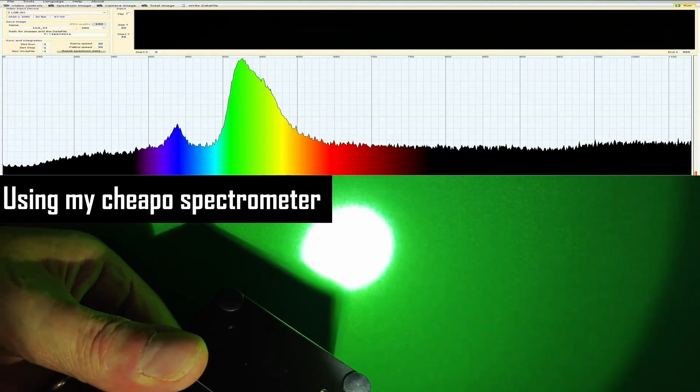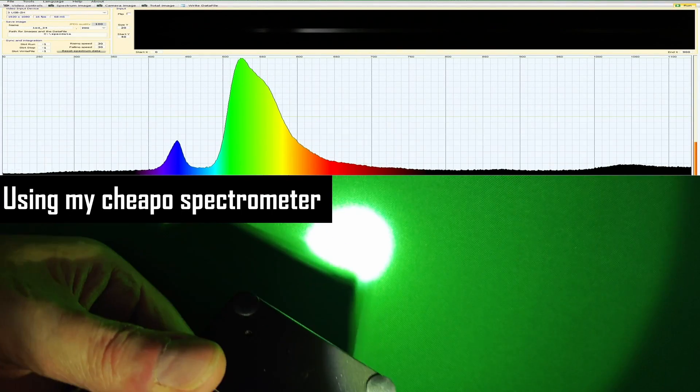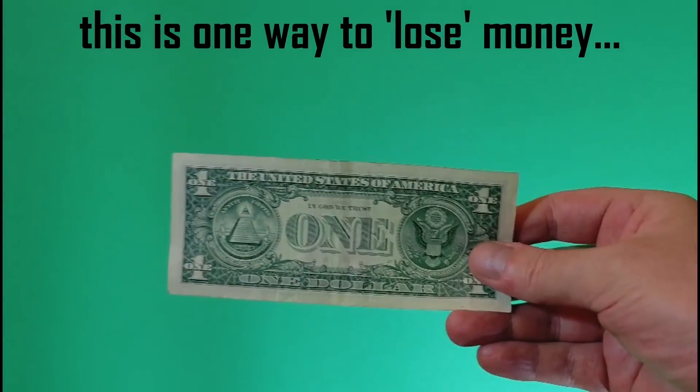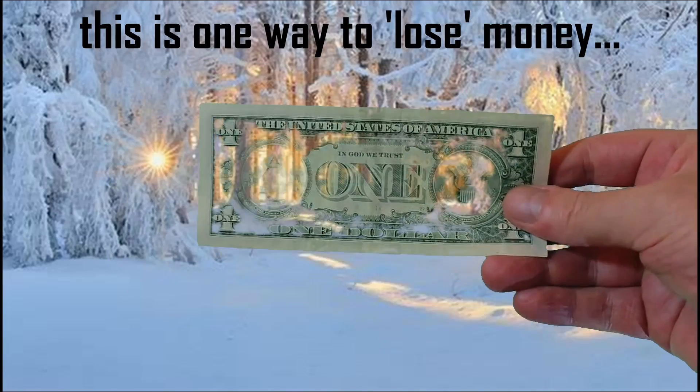The ideal chroma key background is one that is very monochromatic. But when I measure the spectral content of my own screen, I can see that it is far from perfect. And this makes it more difficult for the computer software to identify the background from the foreground objects.